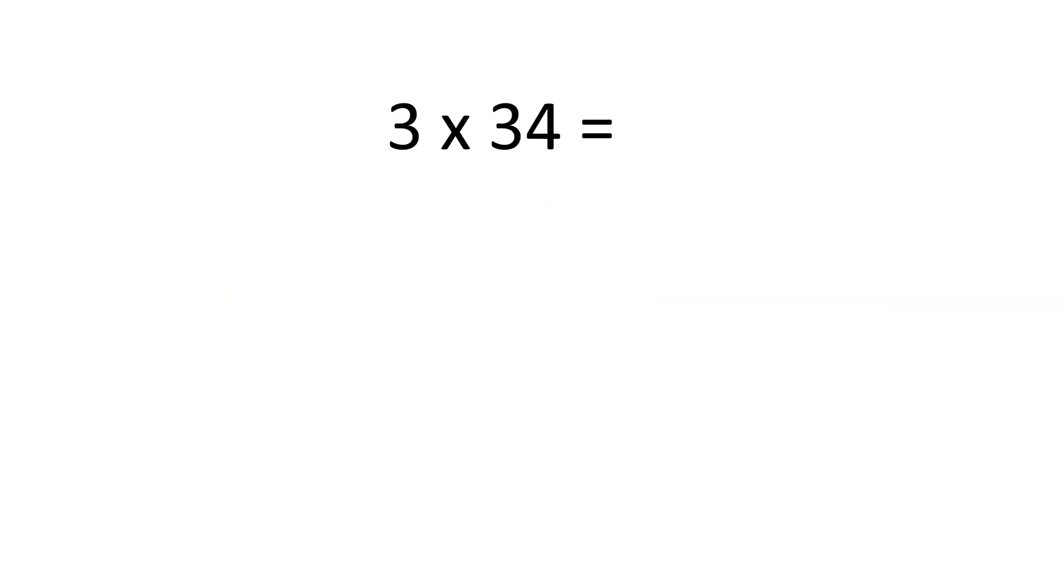Let's have a look at a different example: 3 times 34. First, we partition the two-digit number. 34 partitions into 30 and 4. Then, we multiply each of these parts by the one-digit number, 3.